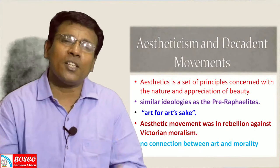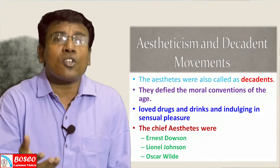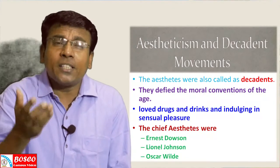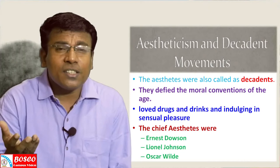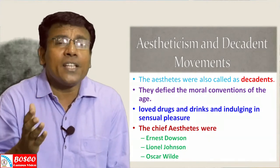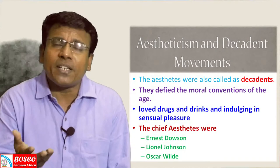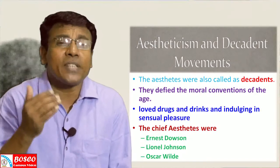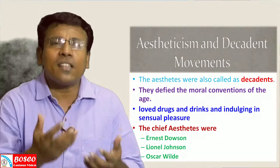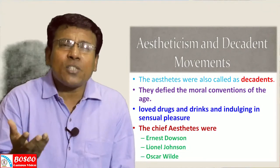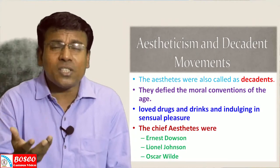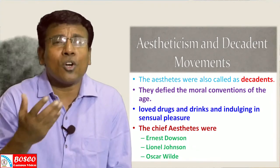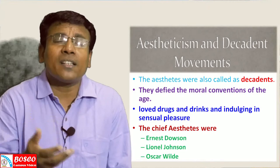The Aestheticians were also called decadents because they defied the moral conventions of the age. They scandalized Victorian sentiment by indulging in drugs, drinks, and sensual pleasure, going against the currents of the times. The decadents were members of a group of late 19th century French and English poets associated with the Aesthetic movement.